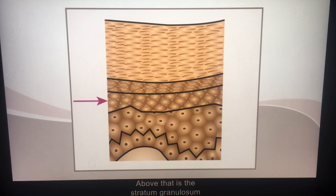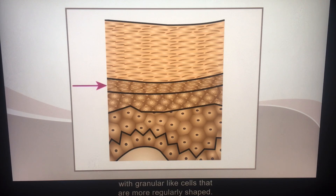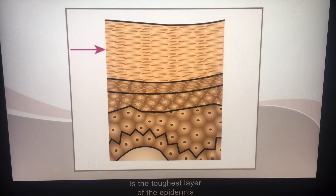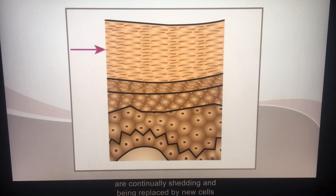Above that is the stratum granulosum with granular-like cells that are more regularly shaped. The next area, the stratum lucidum, only appears on the palms of the hands and the soles of the feet. The top layer, the stratum corneum, is the toughest layer of the epidermis and is composed of keratin protein cells that are continually shedding and being replaced by new cells from below.